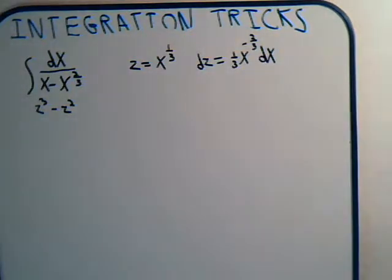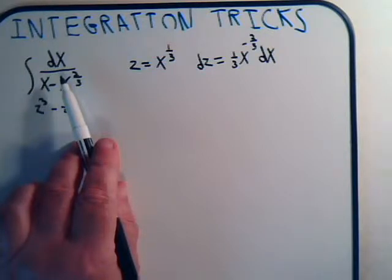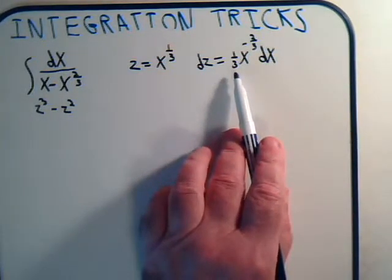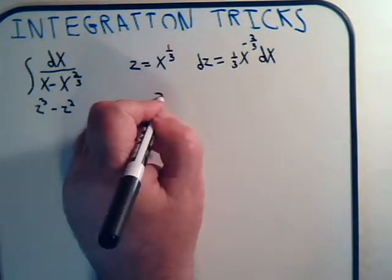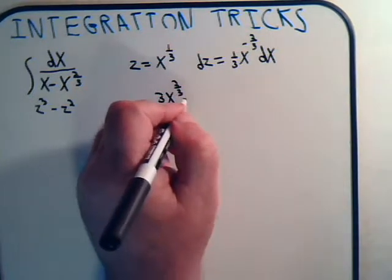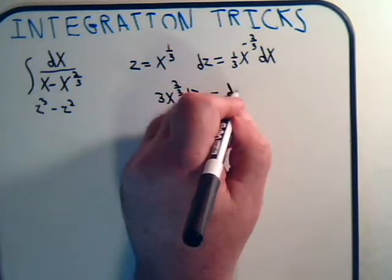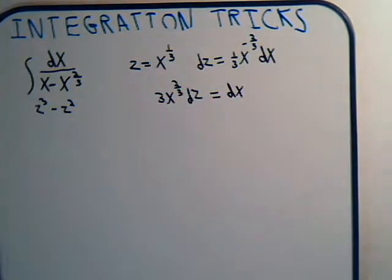And what we want to do is replace dx so that it involves the variable z. So multiply both sides by this, and we have 3x to the two-thirds dz equals dx.